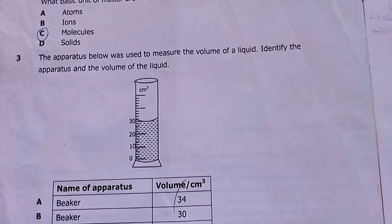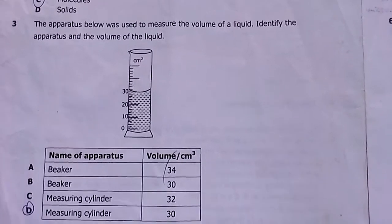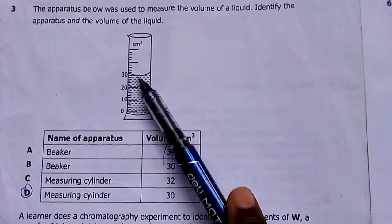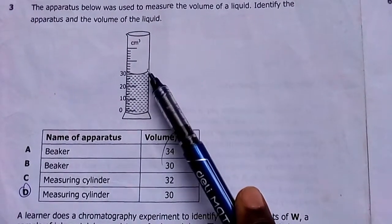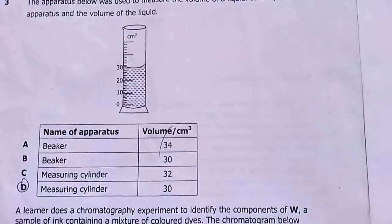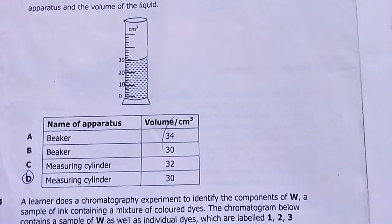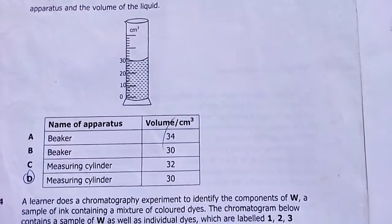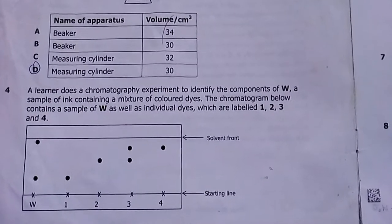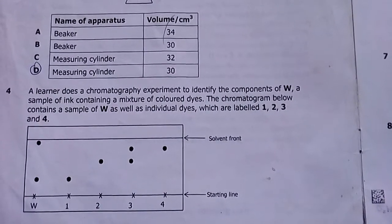Question three: the apparatus below was used to measure the volume of a liquid. Identify the apparatus and the volume of the liquid. You simply have to look at the lower meniscus when reading the volume. The lower meniscus reads 30, and this is a measuring cylinder. My answer was D.